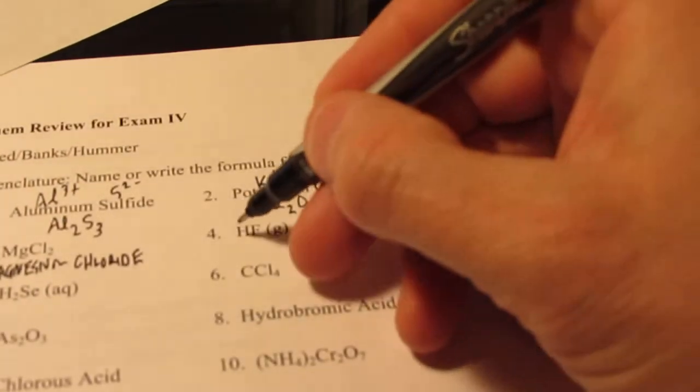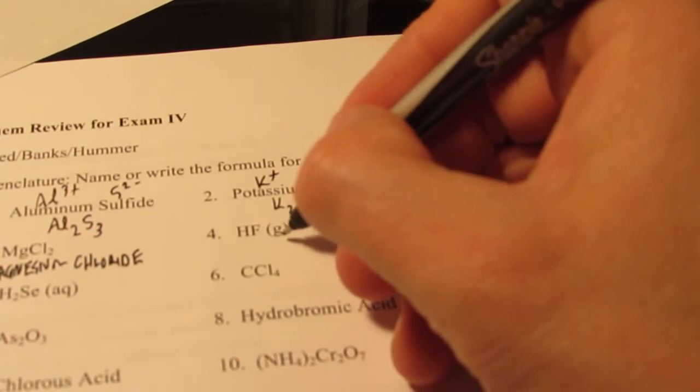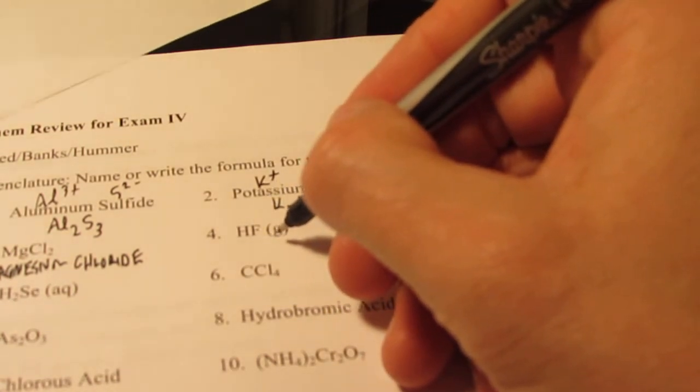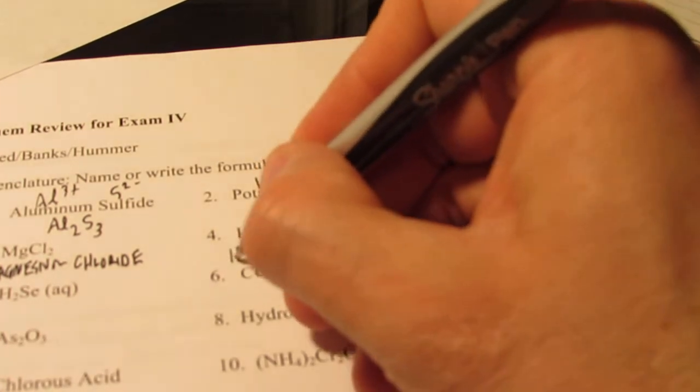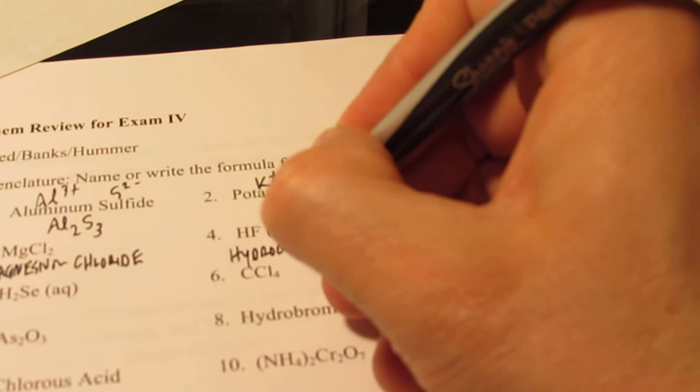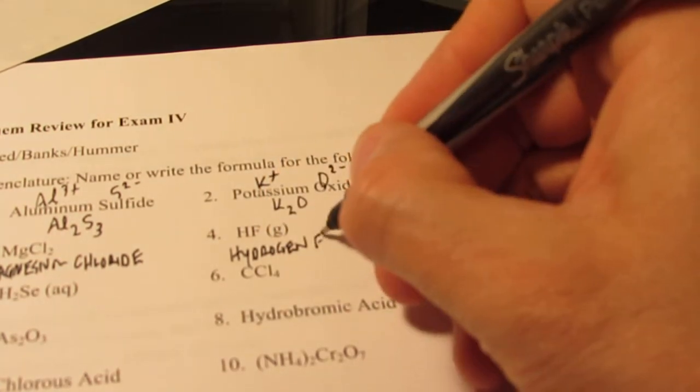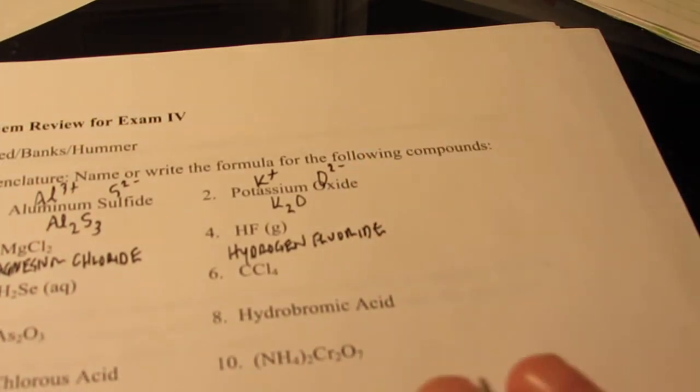Number four, we do have two non-metals stuck to each other. So we're going to use our non-metal rules. This has a G after it to make you aware that that's not an acid. This is gaseous HF stuck together. So H is hydrogen. We don't need to use the prefix mono. And F is fluorine, but it's binary. So we end it with ide. So it's just simply hydrogen fluoride.